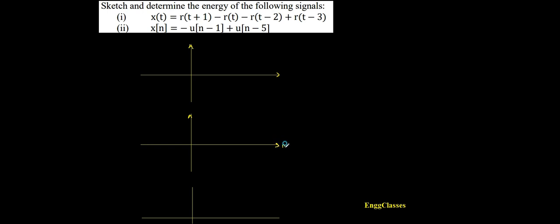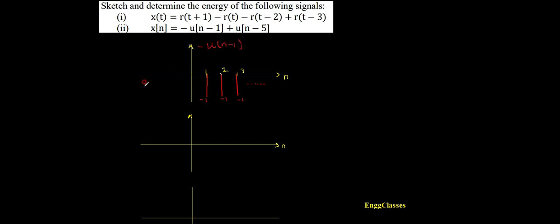This is a discrete time signal. The first signal is u of n minus 1. u of n is a unit step signal, and u of n minus 1 is the shifted version shifted to positive 1, so the signal starts from 1 and exists till infinity. Its amplitude is then made negative, giving minus u of n minus 1. The values are minus 1, extending till plus infinity.